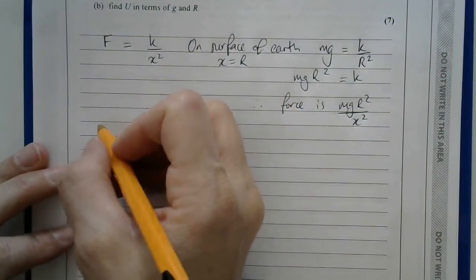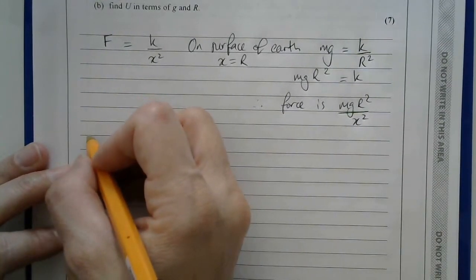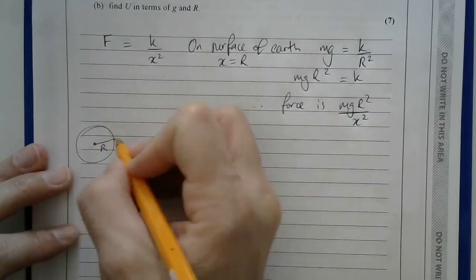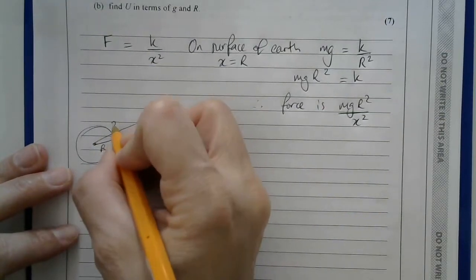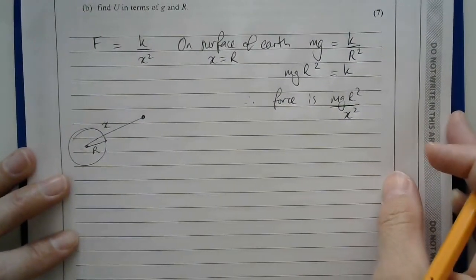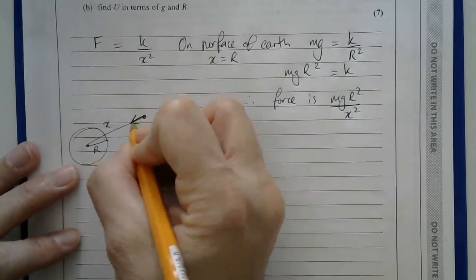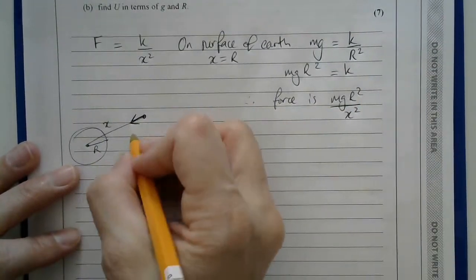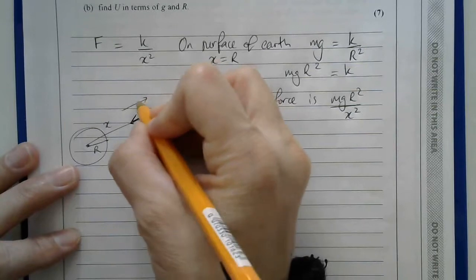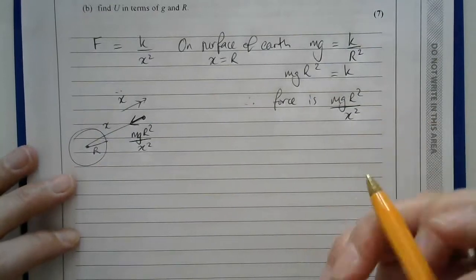So what can I say about this particle? I know that I have the surface of the Earth. There's r. Everything is measured from the center of the Earth. So there's x. I know that when it's at this random position, a distance of x from the center of the Earth, I've got the force towards the center of the Earth of this, mg r-squared over x-squared. I know that the acceleration is measured, because x is measured in this direction, x double dot is measured in this direction.